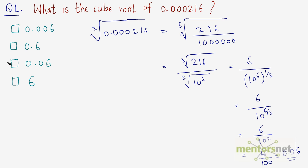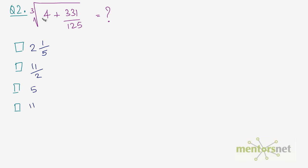The answer to question 1 is 0.06. Let us move on to the second question: cube root of 4 and 331 over 125.